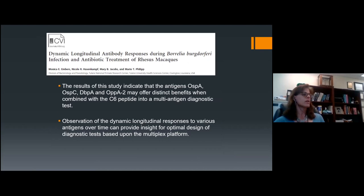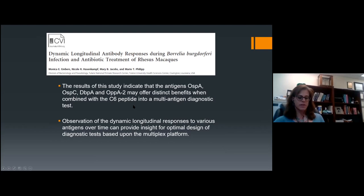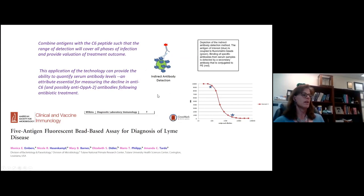We published this paper indicating that five different antigens could be used in combination for a diagnostic test, using a Luminex-based platform. These are cytometric beads coated with the antigen of interest, using different colors for different antigens. We pass the serum over, wash it, and then apply a secondary antibody. This approach is not only qualitative but quantitative, and we can measure the response to multiple antigens simultaneously with basically a microliter of serum.